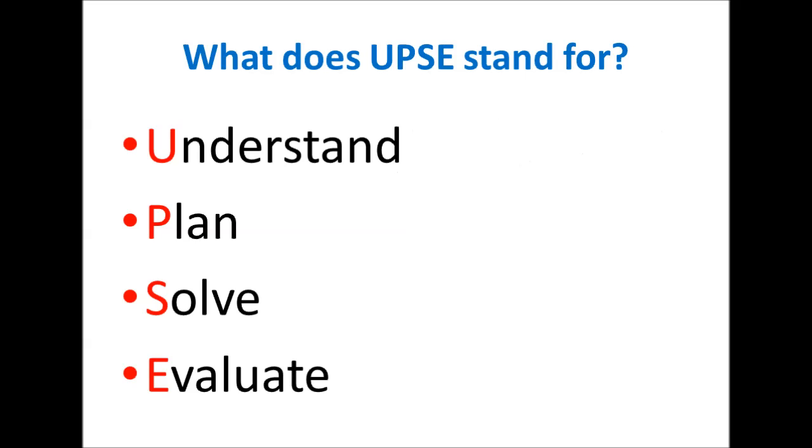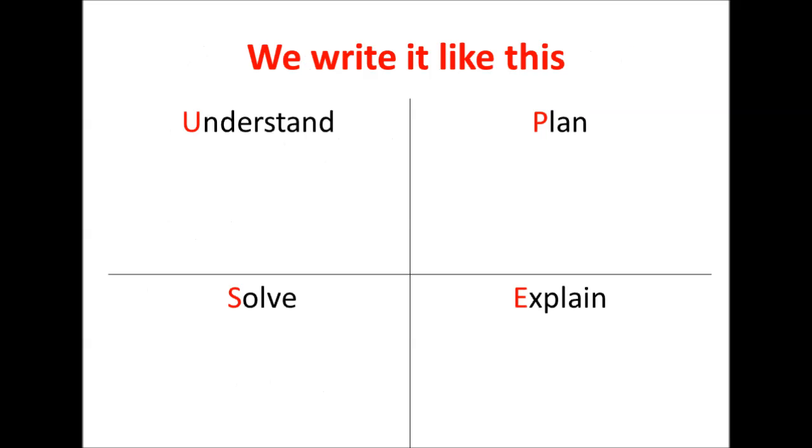UPSI stands for understand, plan, solve, and evaluate. It's a four-step problem-solving method. This is how we write it. We take up half a page and we draw these four quadrants and one of them is understand, next is plan, solve, and explain. You don't have to write the whole word. You can just write the letters and that's fine.